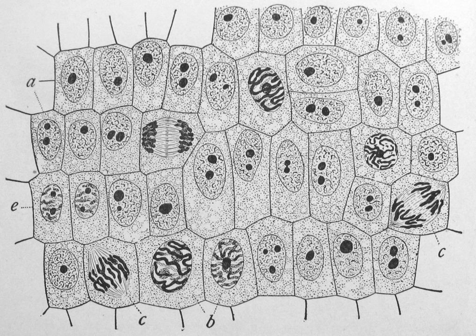All cells, whether prokaryotic or eukaryotic, have a membrane that envelops the cell, regulates what moves in and out (selectively permeable), and maintains the electric potential of the cell. Inside the membrane, the cytoplasm takes up most of the cell's volume. All cells except red blood cells — which lack a cell nucleus and most organelles to accommodate maximum space for hemoglobin — possess DNA, the hereditary material of genes, and RNA, containing the information necessary to build various proteins such as enzymes, the cell's primary machinery. There are also other kinds of biomolecules in cells.